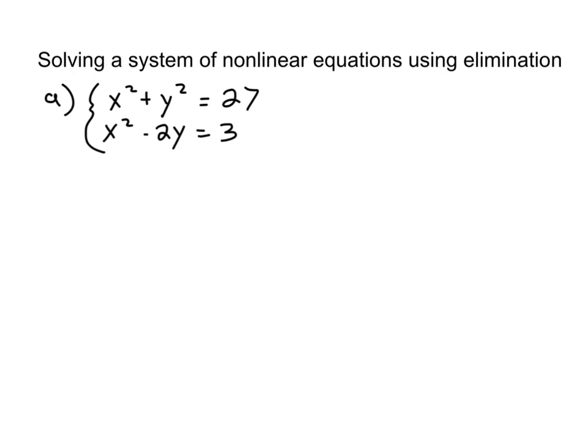So, let's go ahead and get started with elimination. To do elimination, maybe I want to eliminate this x squared. So, the first thing I'm going to do is maybe I'll take this equation and I'll subtract off this equation. So, x squared plus y squared equals 27. And let's do on the bottom, let's multiply everything by negative 1. So, that will be negative x squared plus 2y equals negative 3. So now these cancel. And then you're left with y squared plus 2y equals 24.